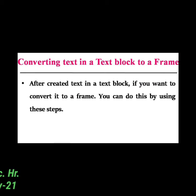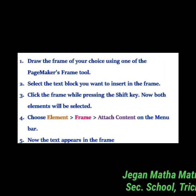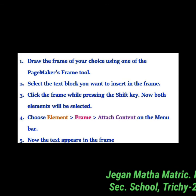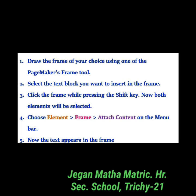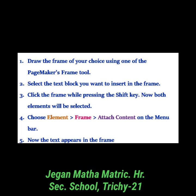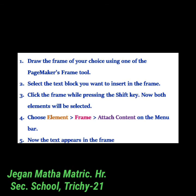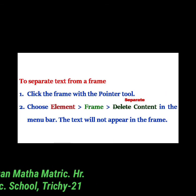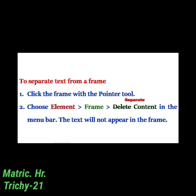Converting a text block to a frame: after creating a text block, you can convert it into a frame. Steps: draw a frame of your choice using the PageMaker frame tool, then select the text block you want to insert into the frame. Click the frame while pressing the Shift key so both elements are selected. Then choose Element > Frame > Attach Content from the menu bar — the text appears in the frame. To separate text from a frame: click the frame with the pointer tool, then choose Element > Frame > Separate Content from the menu bar. The text will then no longer appear in the frame.